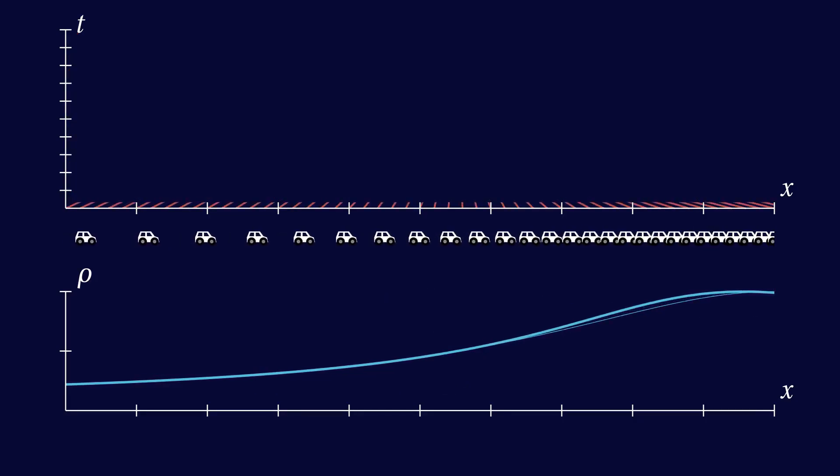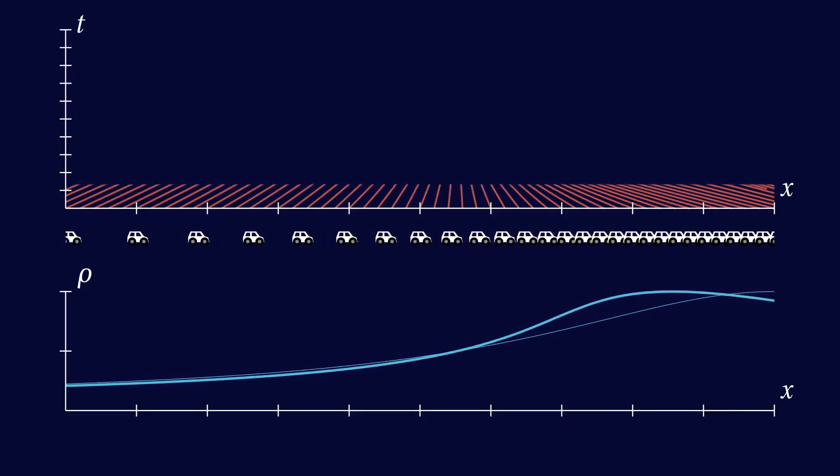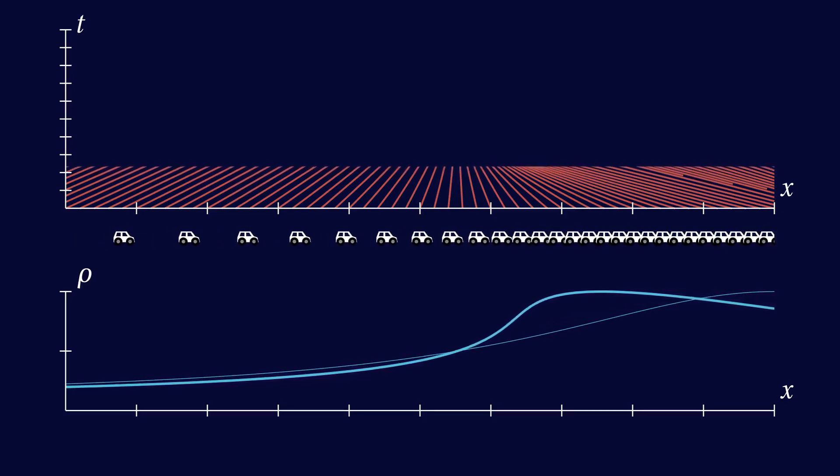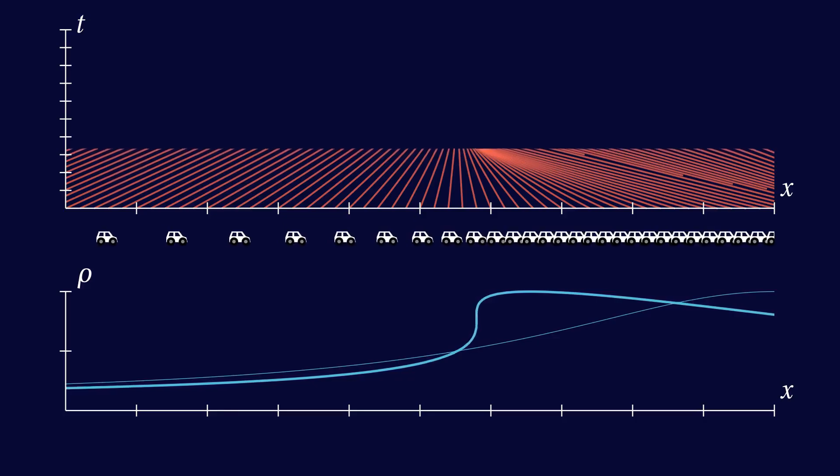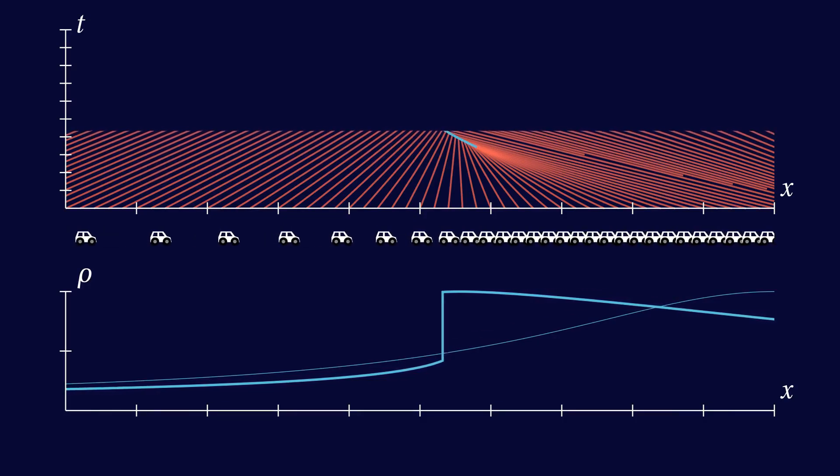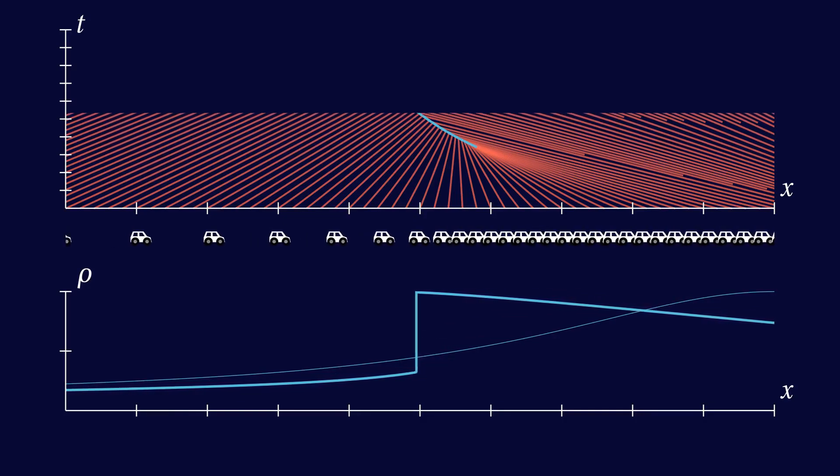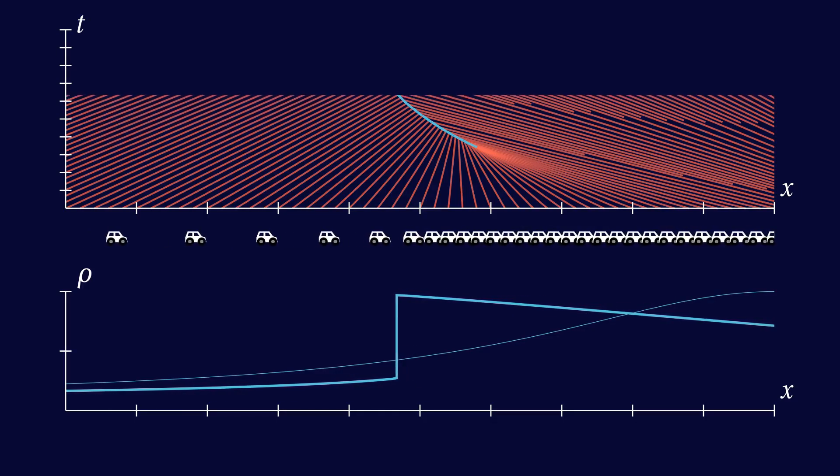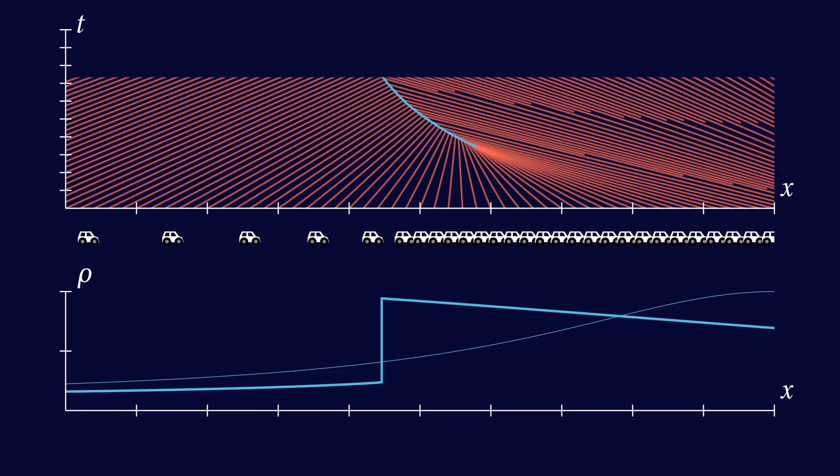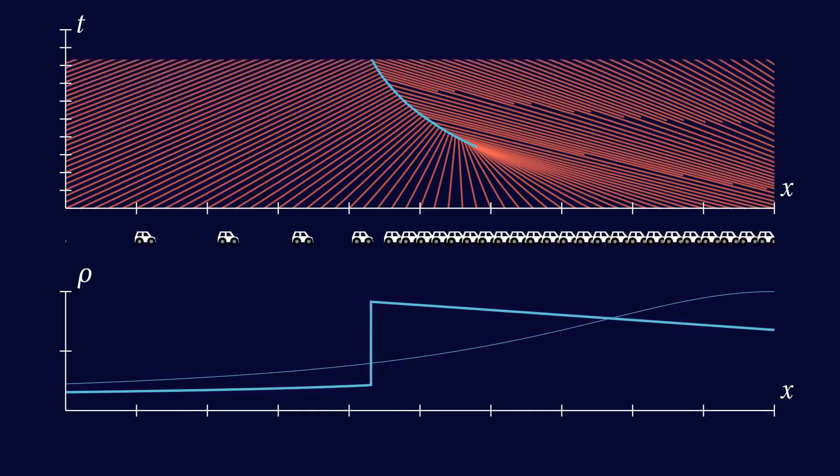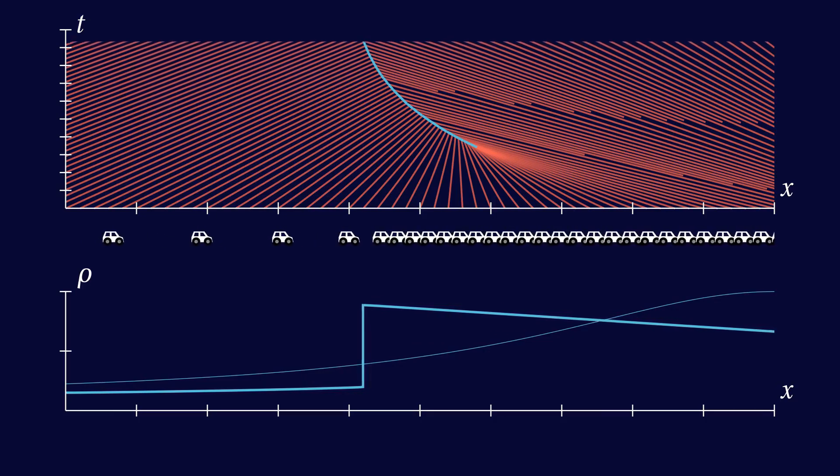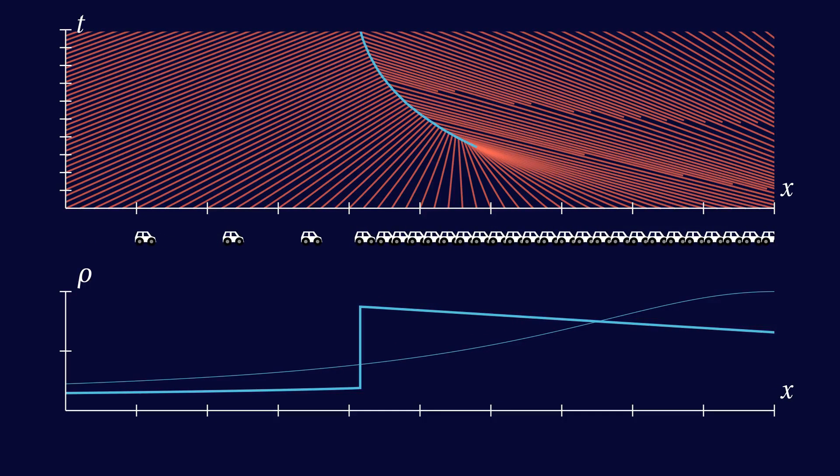Instead, when characteristics meet, they form a shock. This corresponds to a jump in the graph of density over x. The speed of the shock will have to be somewhere between the speeds of the intersecting characteristics. If you're wondering about the exact speed of the shock, this is determined by the fact that the flow into the shock should be the same as the flow out of the shock. But this is not the absolute flow q, but the flow as observed by someone moving with the shock.